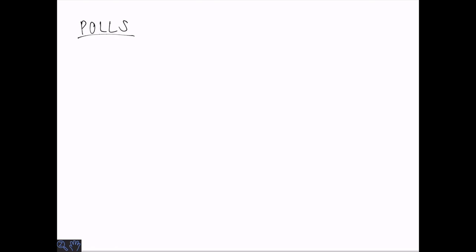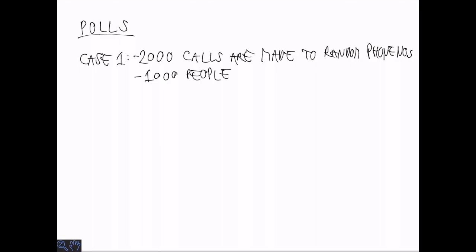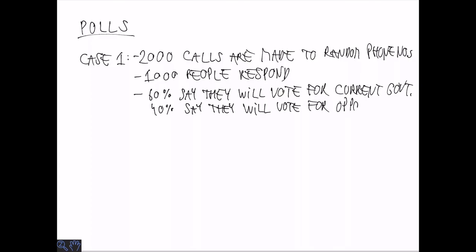Consider the two following settings. In the first setting, we make calls to 2000 random phone numbers. Among those 2000, 1000 people respond. 60% of them say that they are going to vote for the current government.